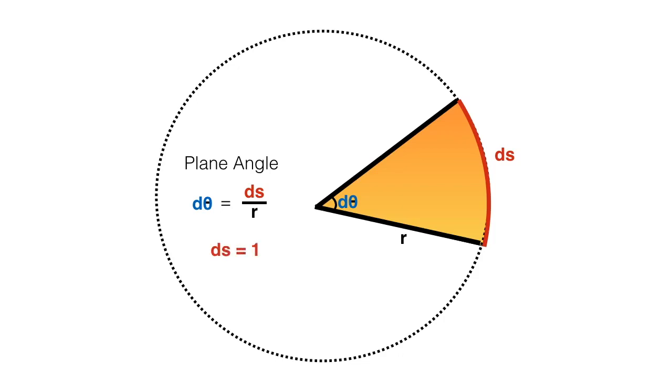When ds is equal to 1, r is equal to 1 unit, then the angle subtended will be equal to 1 radian.